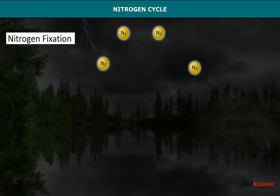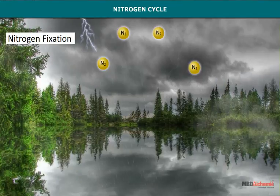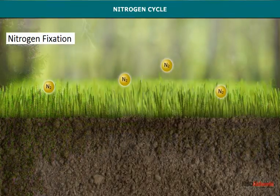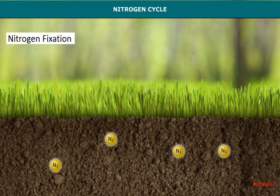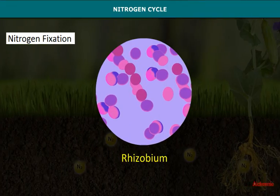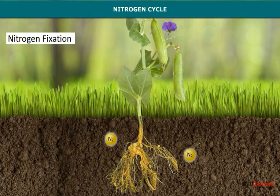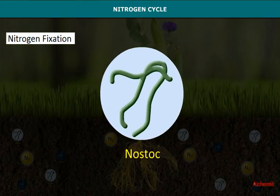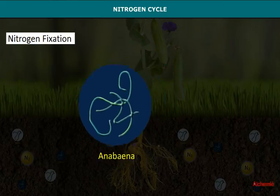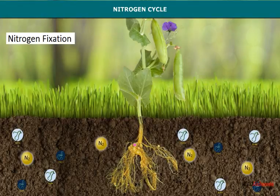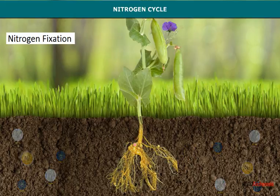Nitrogen fixation is the conversion of nitrogen into a compound of nitrogen. Thunderstorm, lightning, and rain help in the transfer of large quantities of nitrogen into soil. Biological nitrogen fixation is carried out by symbiotic bacteria — Rhizobium, present in the root nodules of leguminous plants like pea. Cyanobacteria like Nostoc and Anabaena also fix nitrogen. Some free-living bacteria like Clostridium also fix nitrogen in soil.